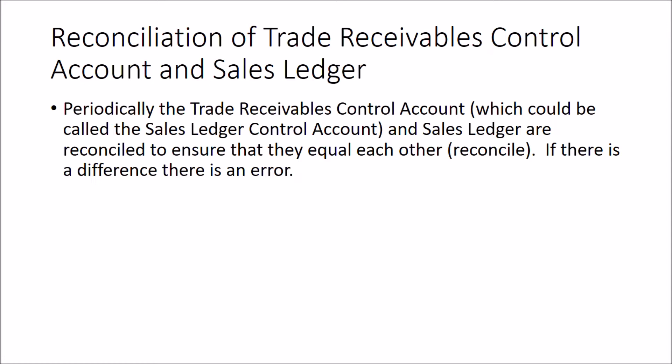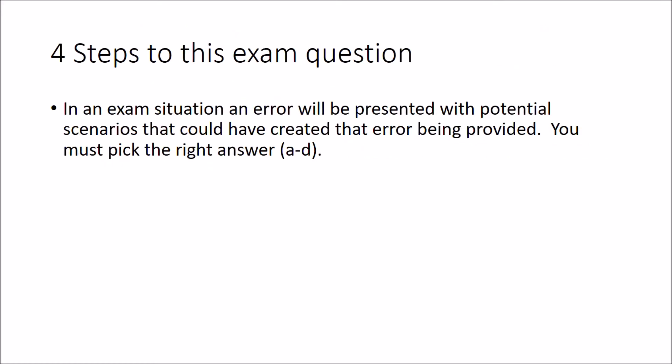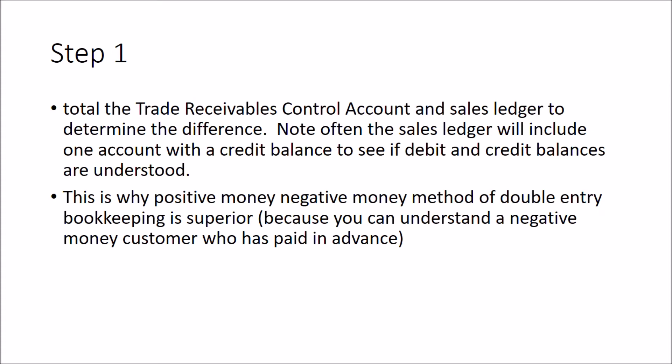To answer this type of question, we're going to reduce it to a four-step process so we don't have to rely on mental arithmetic or mental gymnastics in the exam. In the exam, errors will be presented with potential scenarios - options A to D - and you'll pick the right answer, which might be one or two of them. Step one: total the trade receivables control account and the sales ledger to determine the difference.